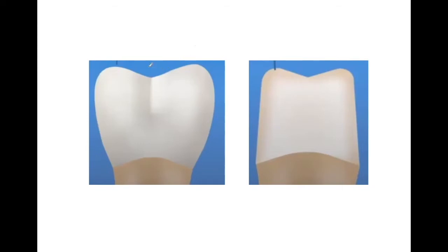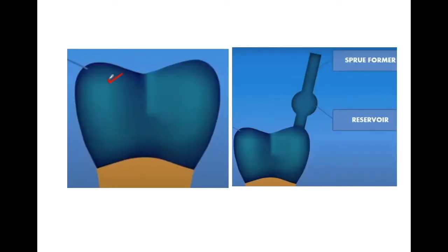Suppose this is the tooth on which we need to place the crown. We do the crown preparation and take the impression of this preparation. Over this prepared tooth, we make this wax pattern. This wax pattern can be prepared in the oral cavity or on the cast. It will be direct if prepared in the oral cavity and indirect if we take the impression of the tooth, pour it, and then make the wax pattern on the cast.